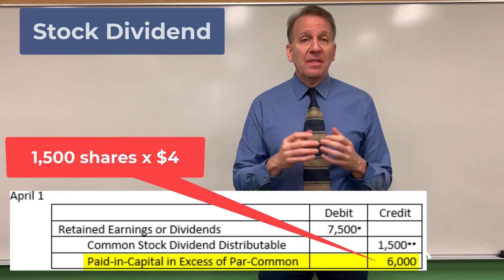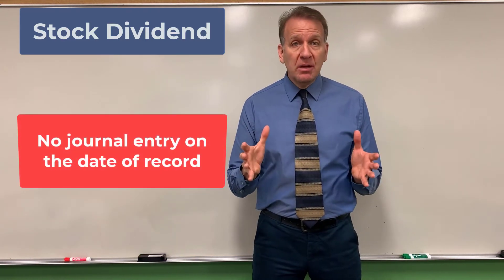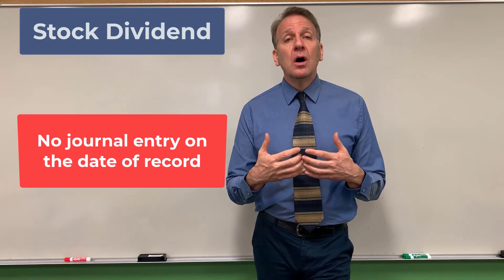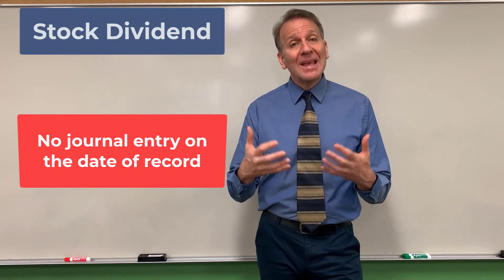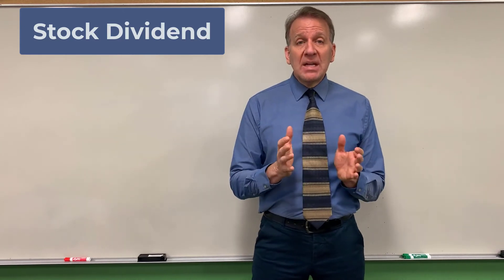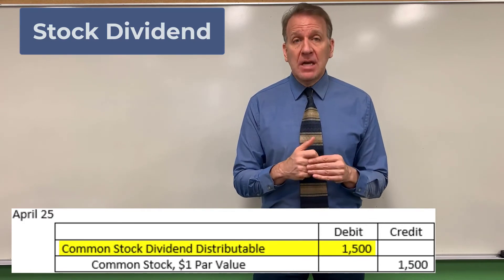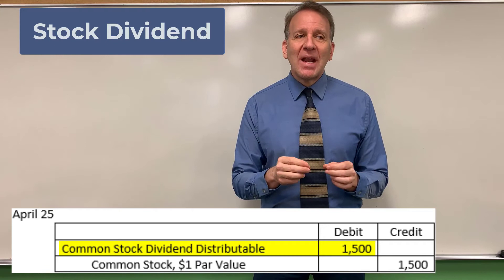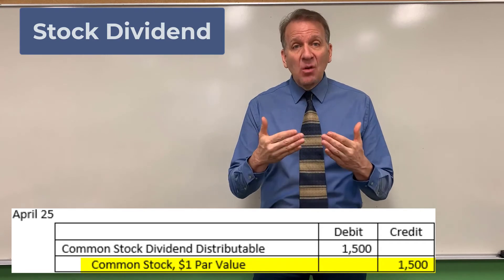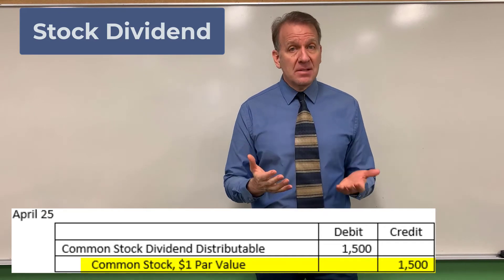That's our journal entry on the date of declaration. On the date of record, there is no journal entry — the corporation simply identifies who owns the stock that day, because those are the shareholders who will receive the dividend. Then on the date of distribution, we eliminate the common stock dividend distributable by debiting it $1,500, and we credit common stock $1 par value for $1,500, because now these shares have been distributed to the owners of record.